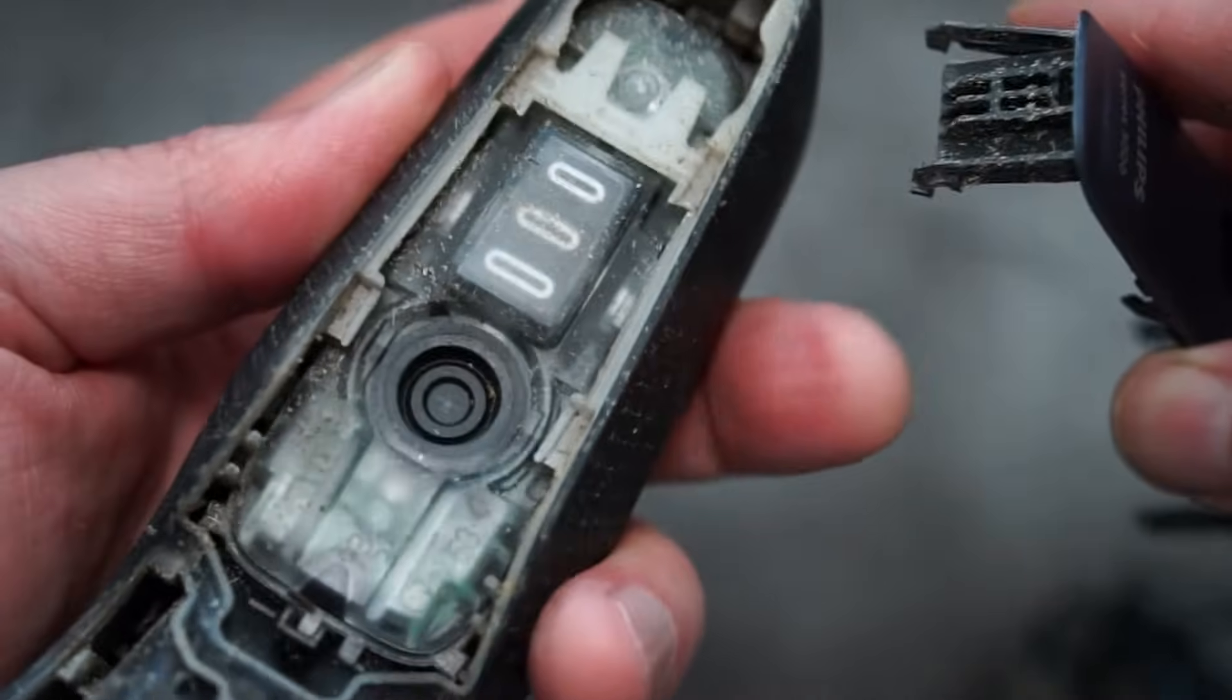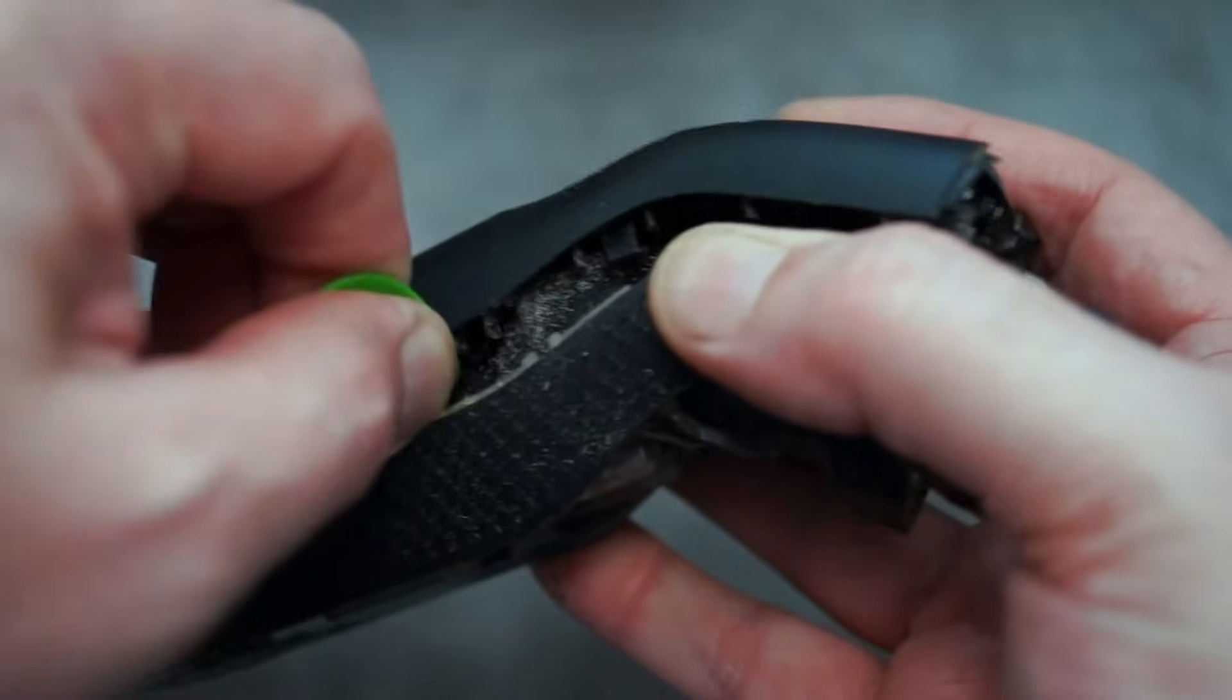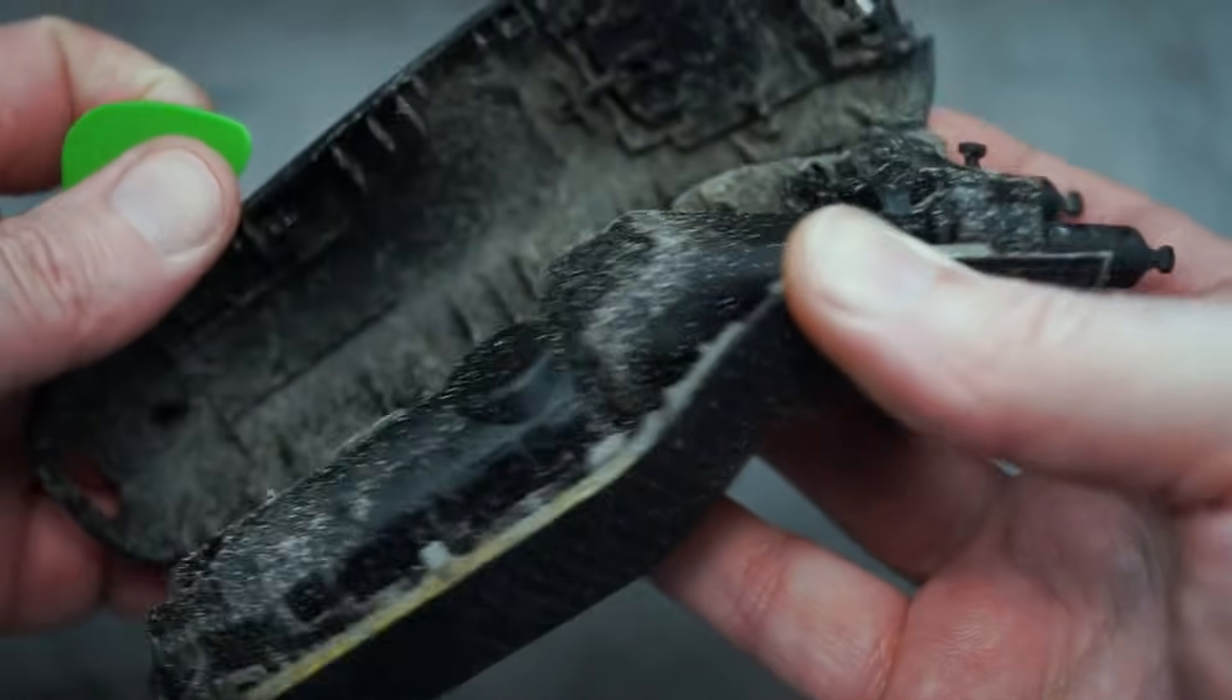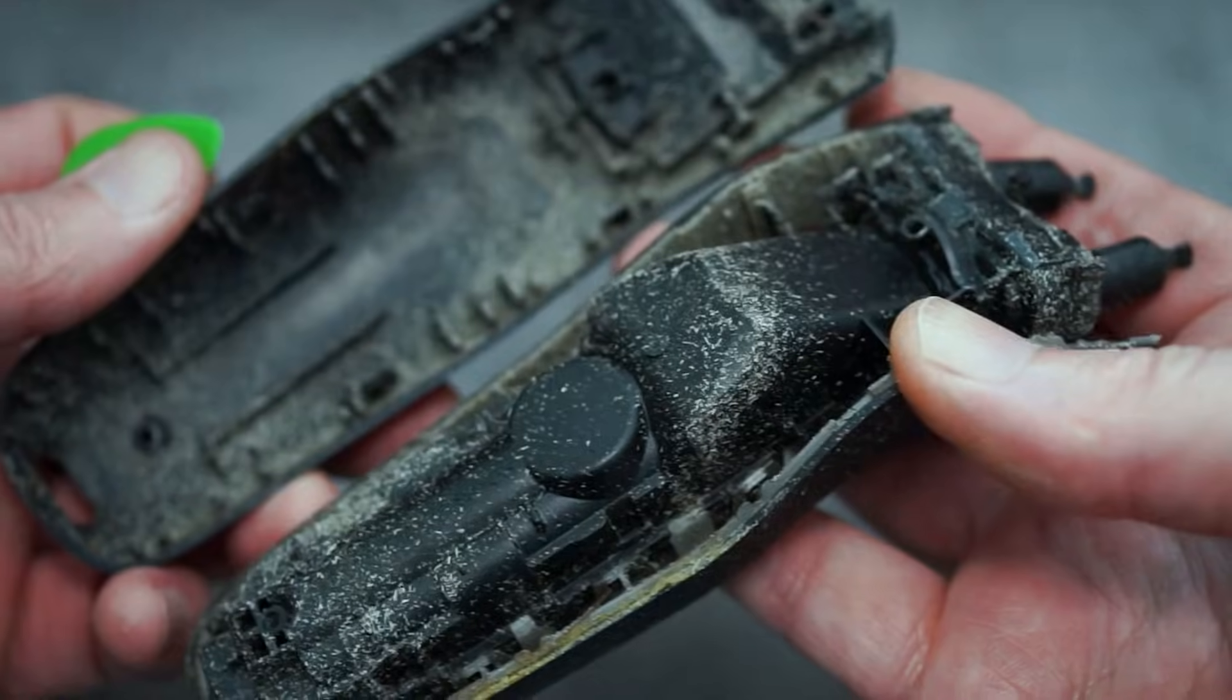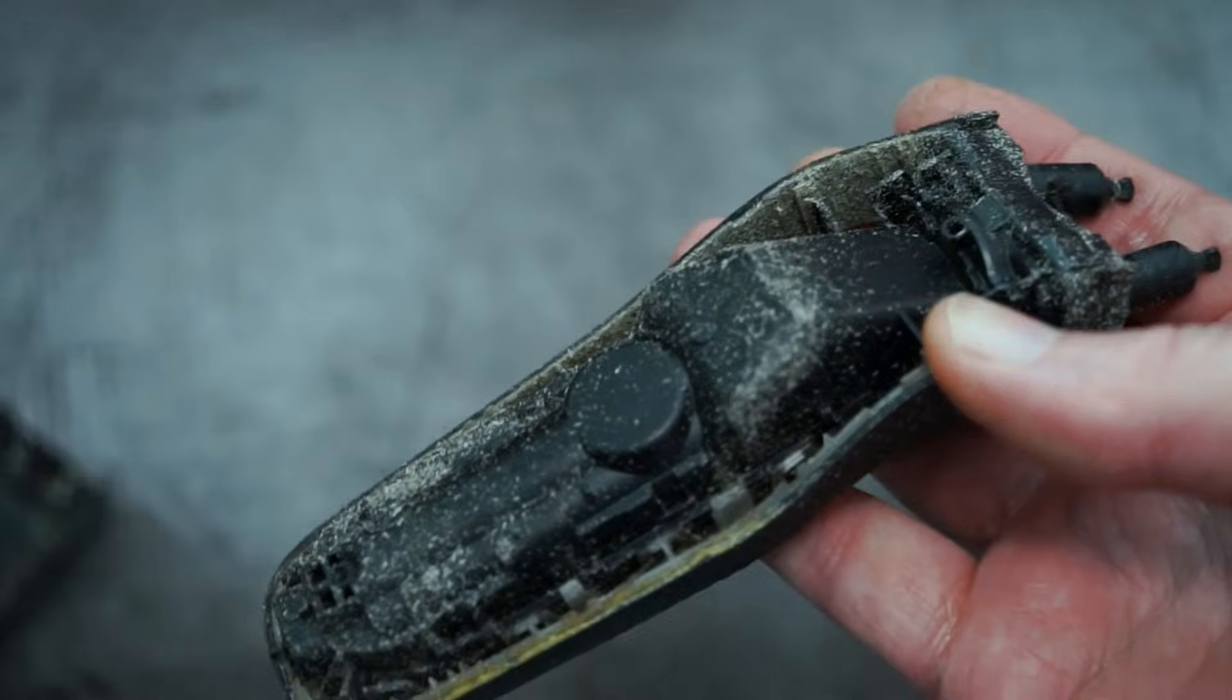The back part of the casing is a bit easier. You don't need to put too much effort into taking that off. Then all we have left is the middle section. Again, you can see a lot of dirt has accumulated on this.